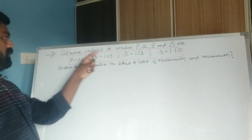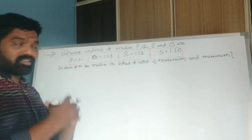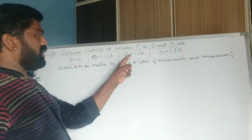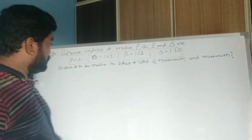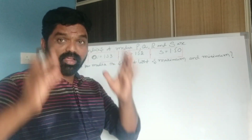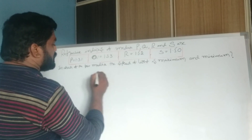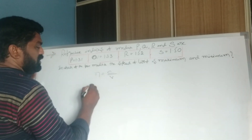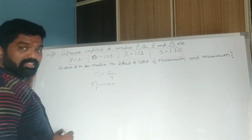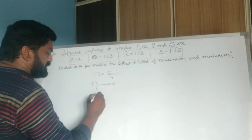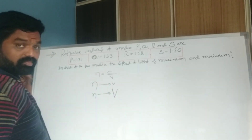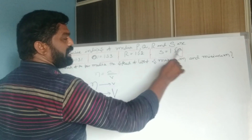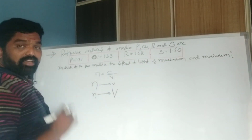Next problem: the refractive indices of media P, Q, R, and S are 1.31, 1.33, 1.52, and 1.50 respectively. In which of the four media is the speed of light maximum and minimum? Since n = C/V, refractive index and speed are inversely proportional — higher refractive index means lower speed. P has the least refractive index at 1.31.